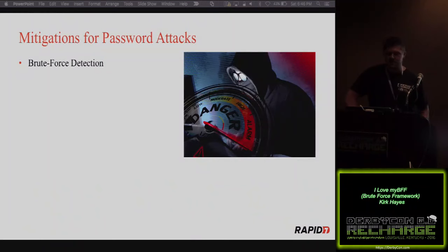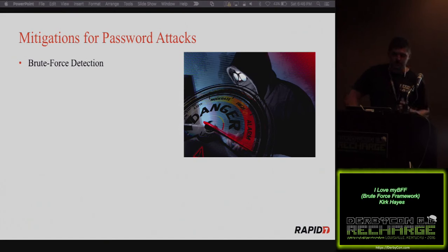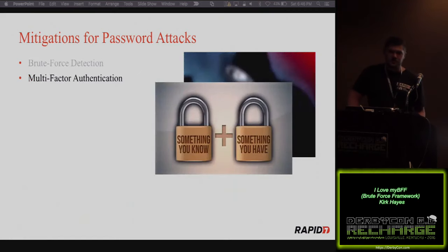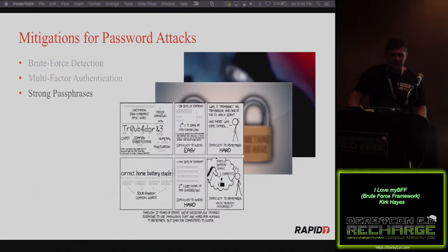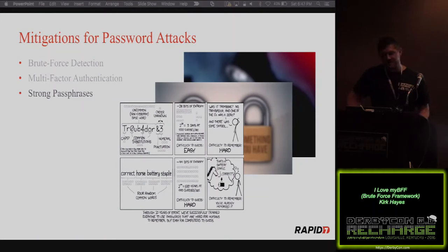When there are password attacks, how do we mitigate that? First thing, we need to detect it — we need to know if somebody's trying, whether against a single account or a slew of accounts, so you can monitor and take action. Next, you want multi-factor authentication — that's going to make it much harder. Just don't use the Juniper bypass that creates a backdoor, because otherwise we'll find it. And lastly, use strong passphrases. Don't use spring2016 or fall2016 — use something longer, more complex, and more difficult.